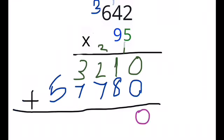0 plus 0 is 0. 1 plus 8 is 9. 2 plus 7 is 9. 3 plus 7 is 10, put your 0 here and carry your 1. 5 plus 1 is 6.